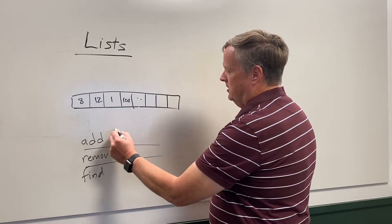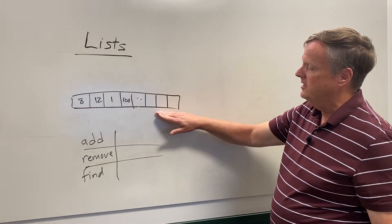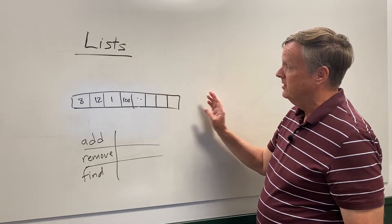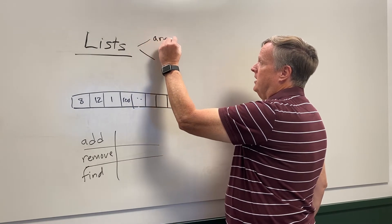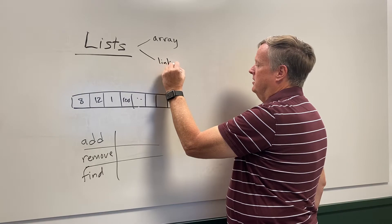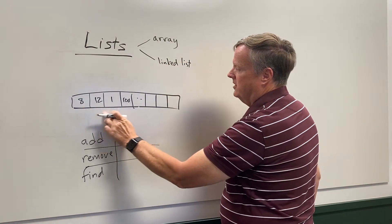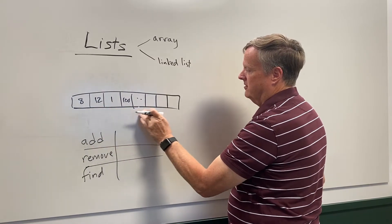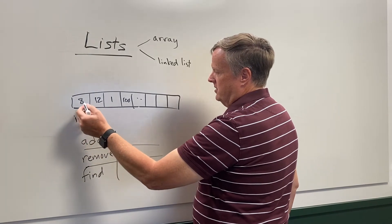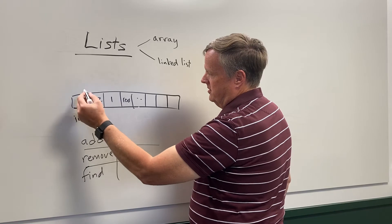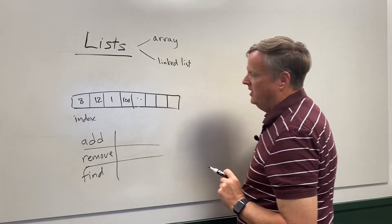An important consideration for a list is that all of the elements have to be contiguous — one after the other. There are two common types of lists: an array and a linked list. In an array, all the elements are laid out in memory one after another, and you have an index to find them. We always start at zero in computer software, so the indices are 0, 1, 2, 3, 4, 5, 6, and so on.